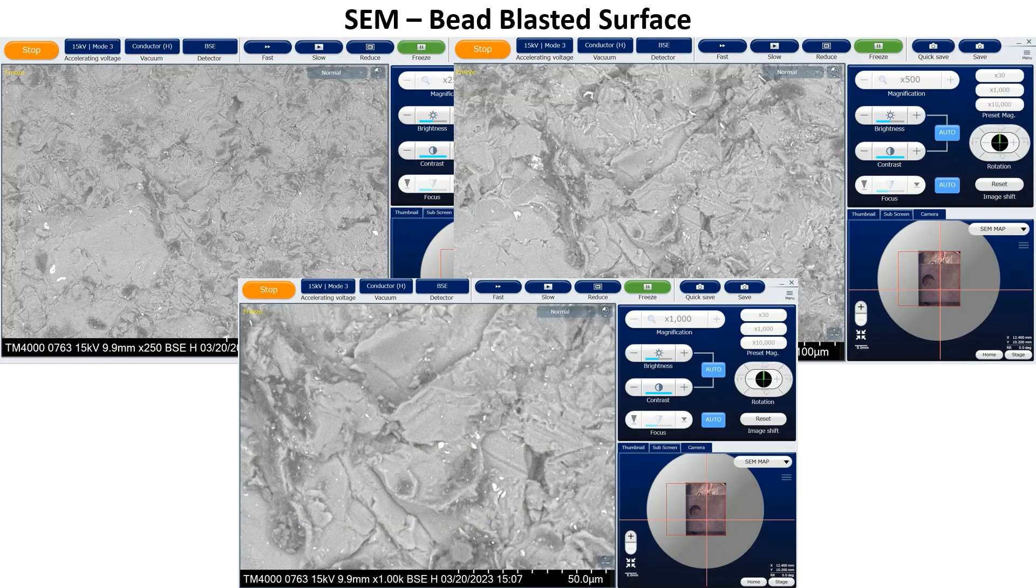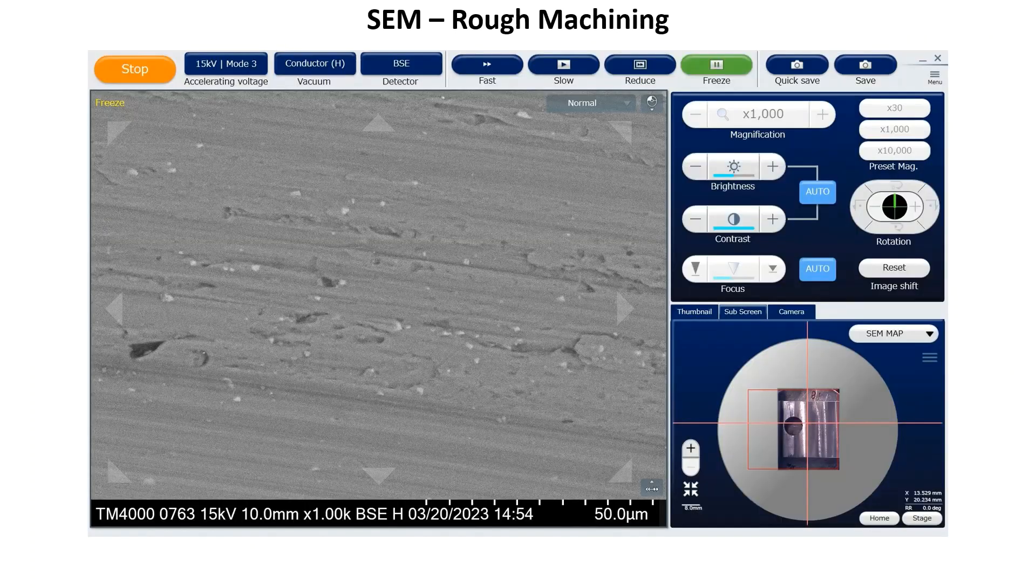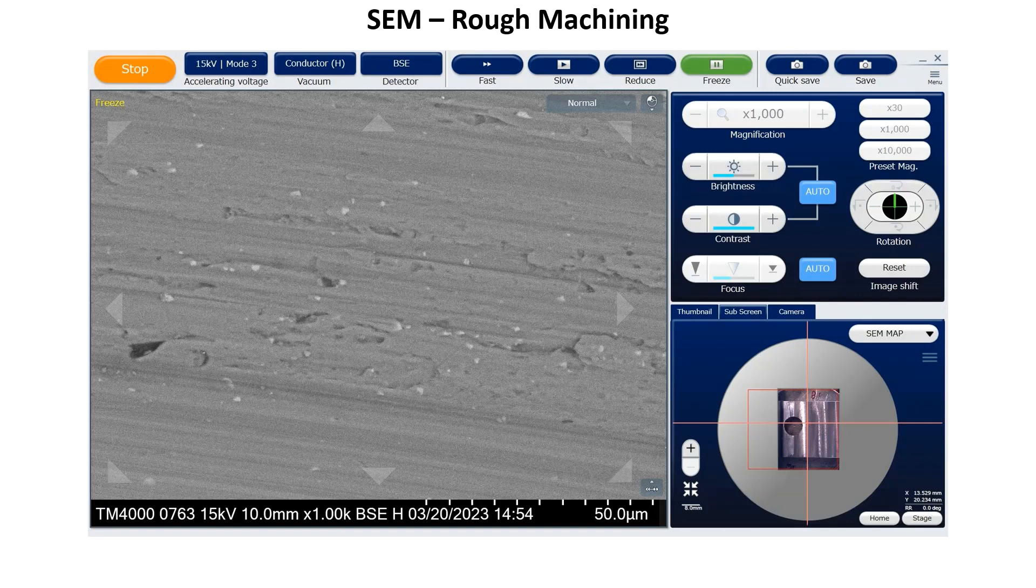This is the bead blasted surface at 250 times magnification in the top left, 500 times on the top right, and a thousand times magnification on the bottom. I was pretty surprised with the roughness and topography of it once I zoomed in. It is even more striking when compared to some of the other surface finishes. This is the rough machined surface at a thousand times magnification. I cut fast with a pretty dull four flute three-eighths inch end mill.